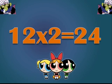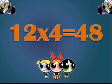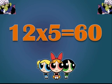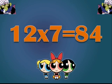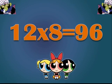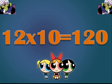12 ones are 12. 12 twos are 24. 12 threes are 36. 12 fours are 48. 12 fives are 60. 12 sixes are 72. 12 sevens are 84. 12 eights are 96. 12 nines are 108. 12 tens are 120.